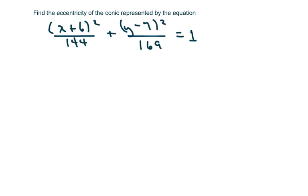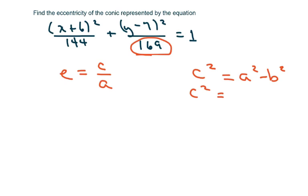The next problem is: find the eccentricity of the conic represented by the equation. We know this is an ellipse, and the eccentricity is c over a. We also know that we get c from using c squared equals a squared minus b squared.